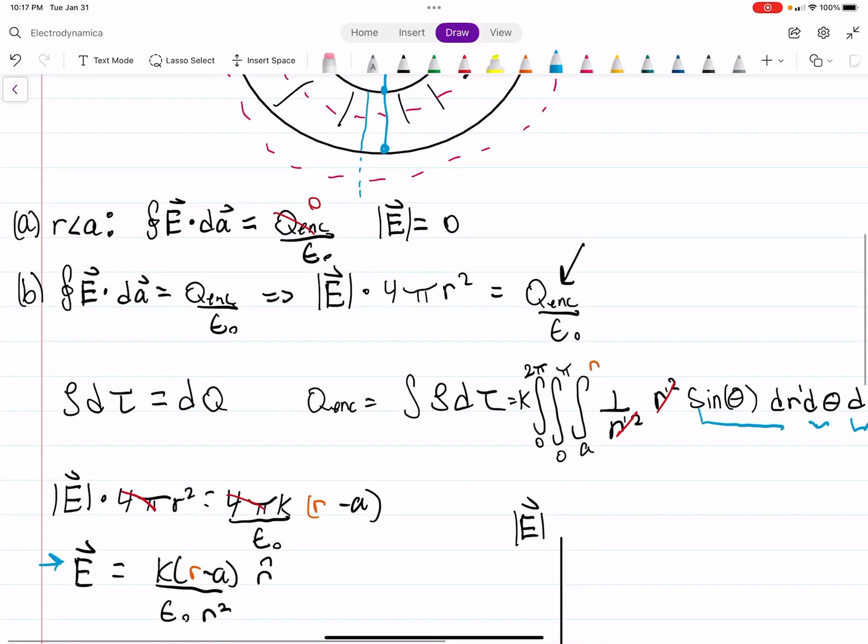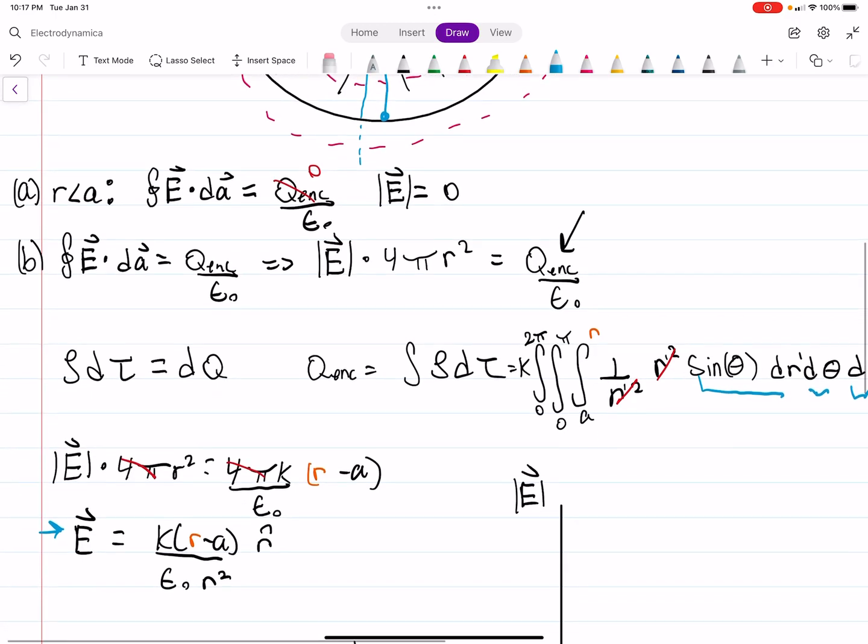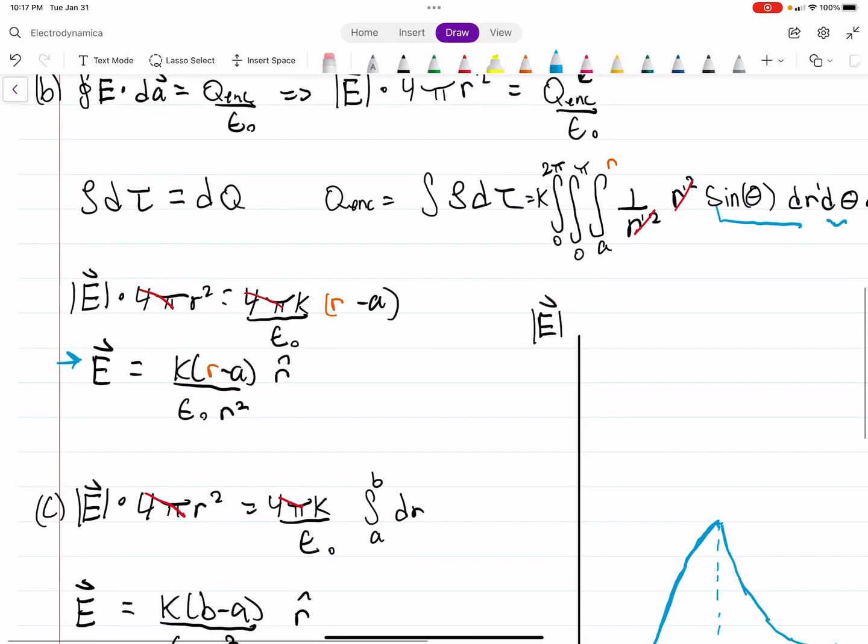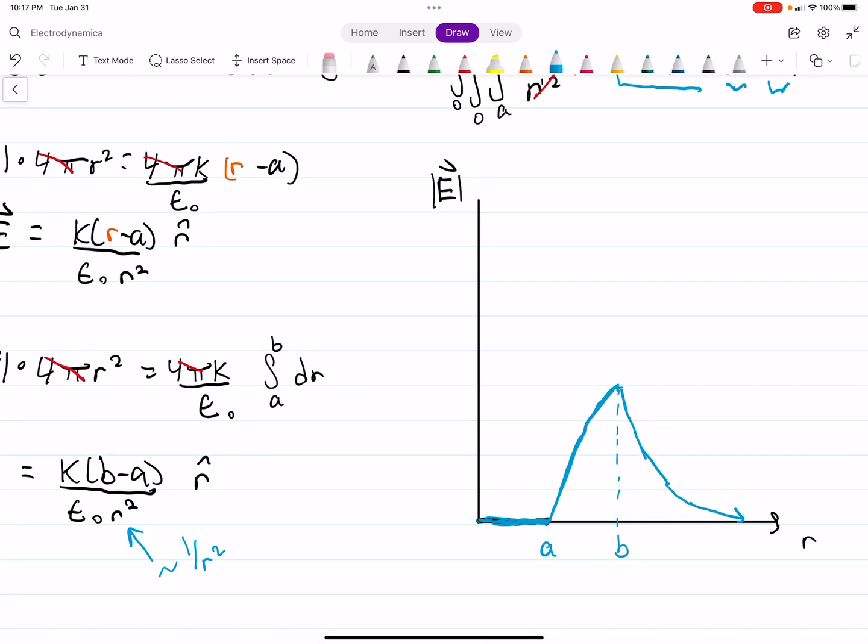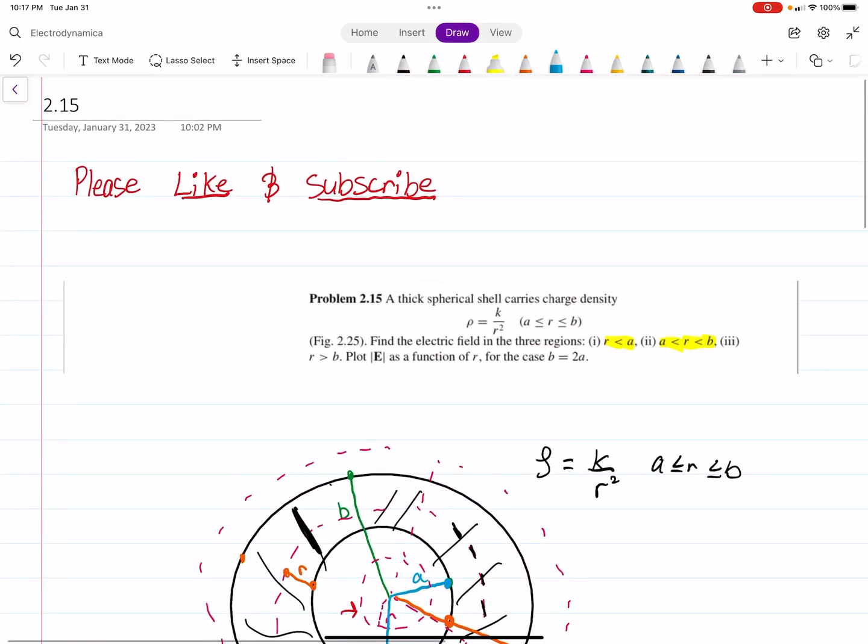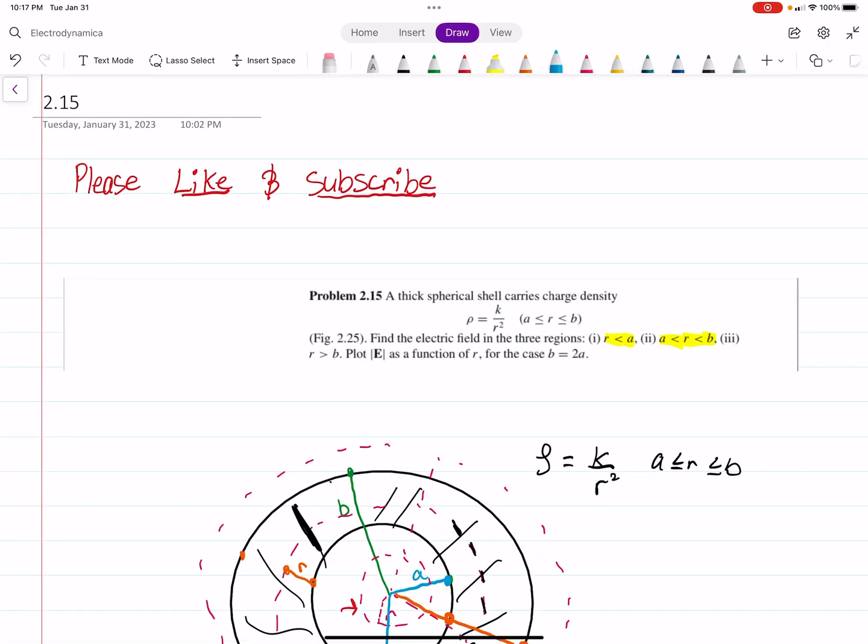You write down Gauss's law for each region. You write down your electric field times your surface area, which doesn't change in any of these processes. And then you need to find your enclosed charge. So the enclosed charge sometimes will require you to integrate, but it's pretty straightforward. Once you integrate it, you just solve for your electric field. And then just looking at our equations, I think it's pretty straightforward to draw the graph of it. So hopefully that makes sense. And if it did, please like this video and subscribe, and I'll post more videos. Thank you.